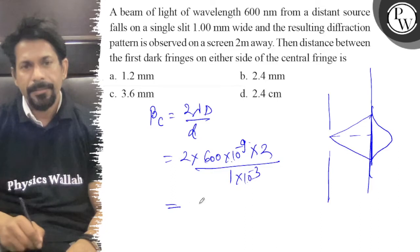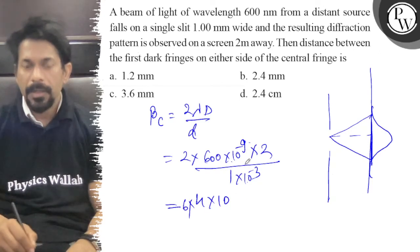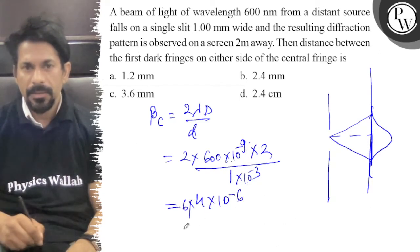So this is how you have 2 times 4 into 10 power minus 6, 24 into 10 power minus 6.